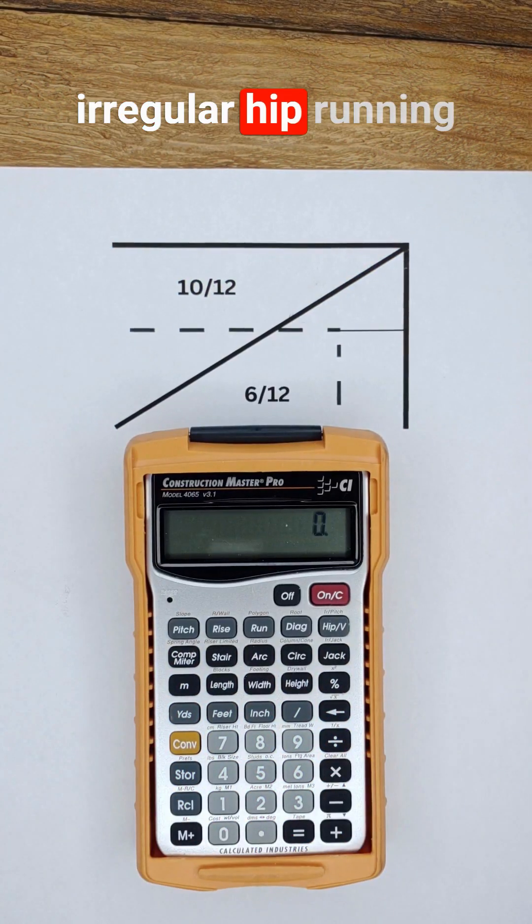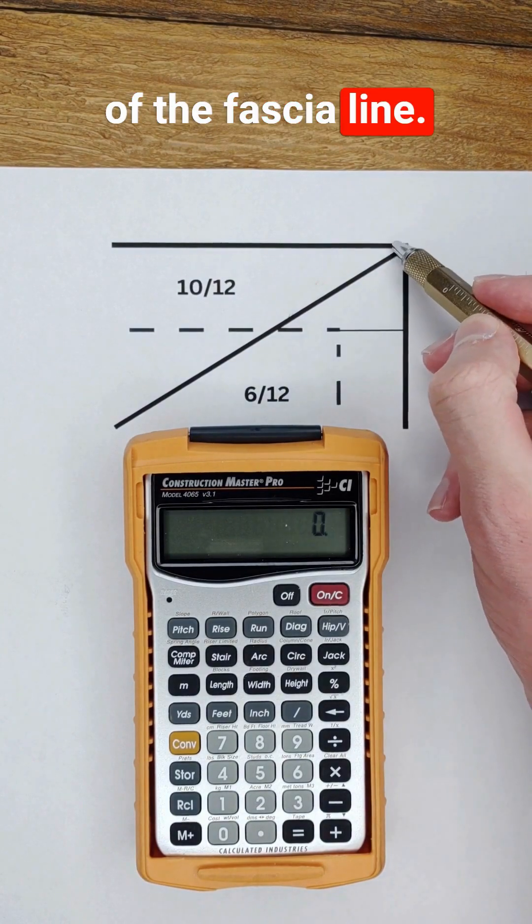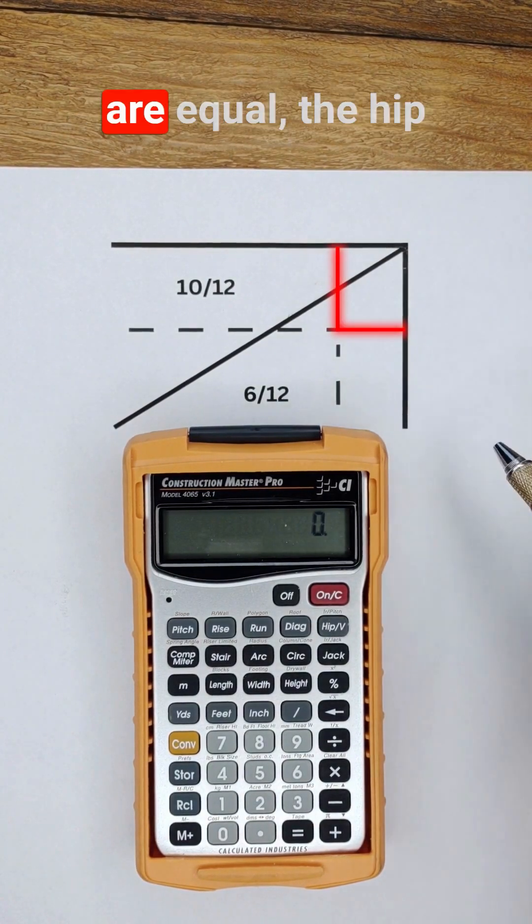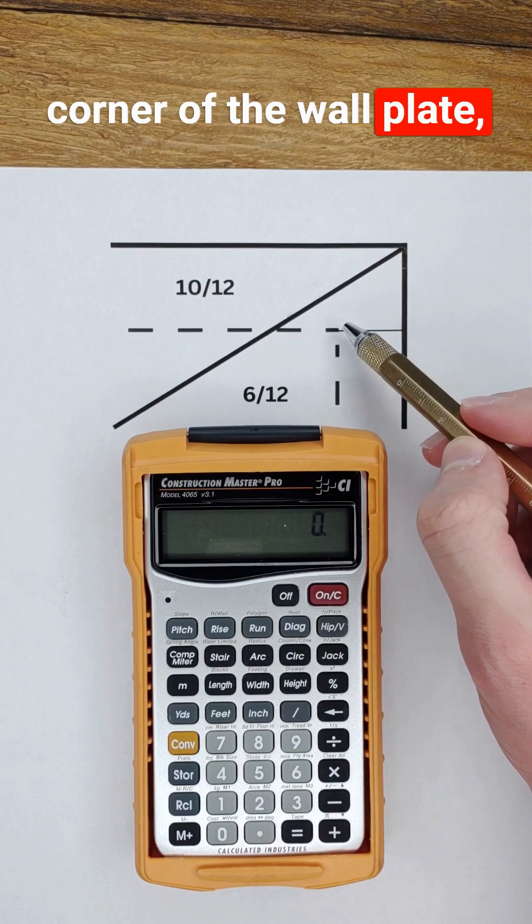Here we have an irregular hip running to the corner of the fascia line. Since the overhangs are equal, the hip won't run through the corner of the wall plate.